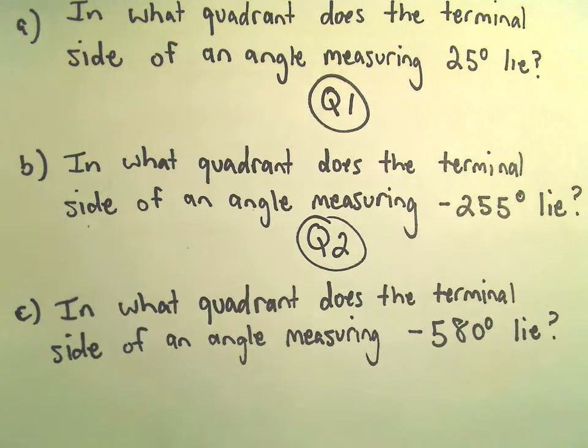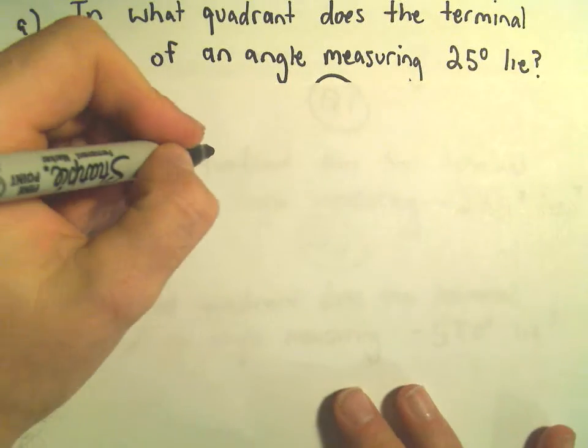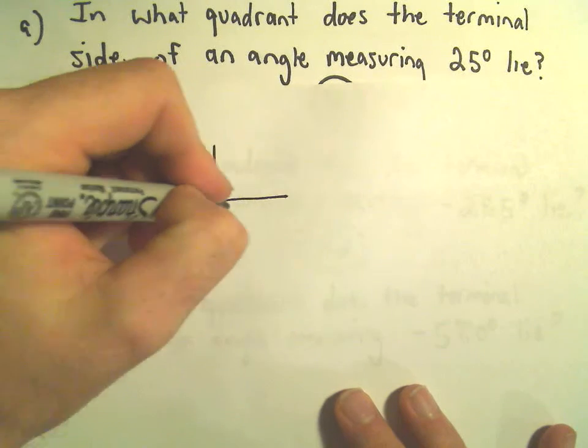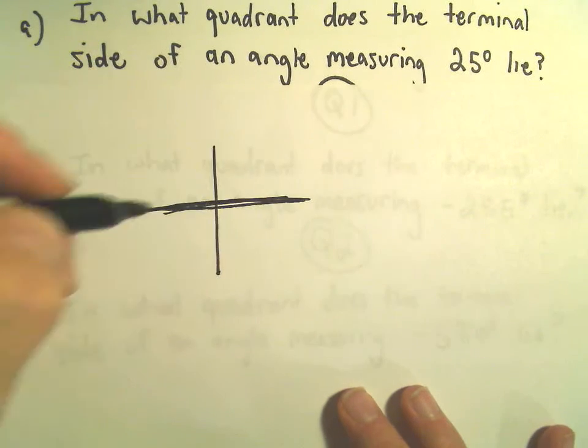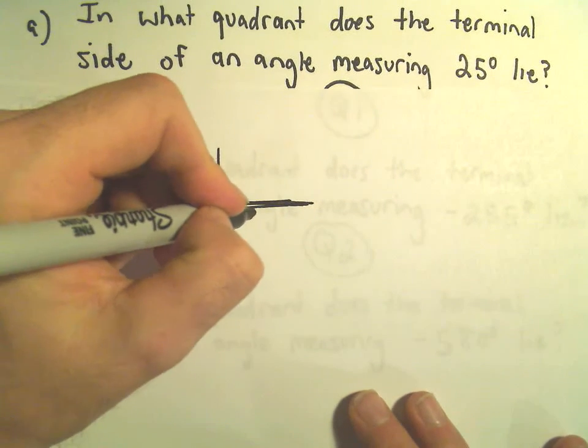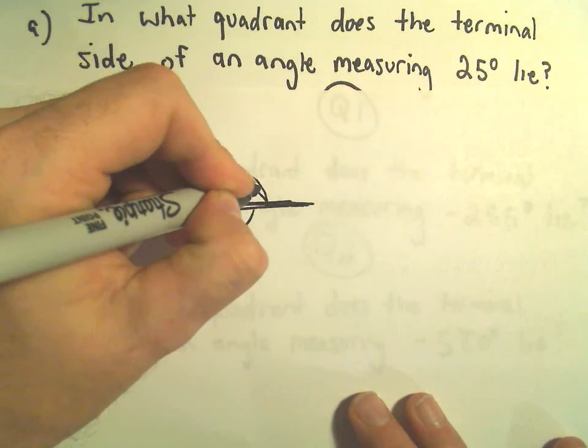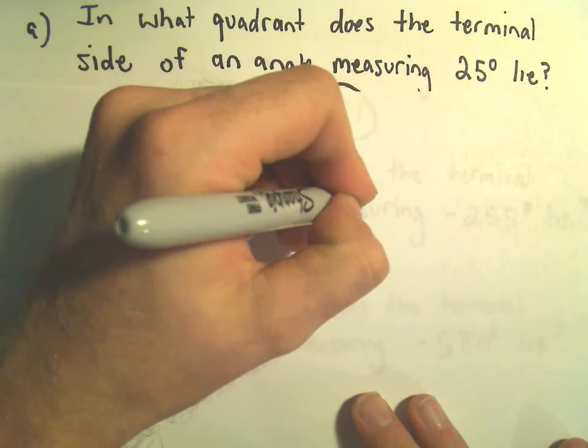Last but not least, we want to figure out where negative 580, where's the terminal side of that one? Since we're doing negative angles, starting at the x-axis, if you go all the way around, that's going to be negative 360 degrees.